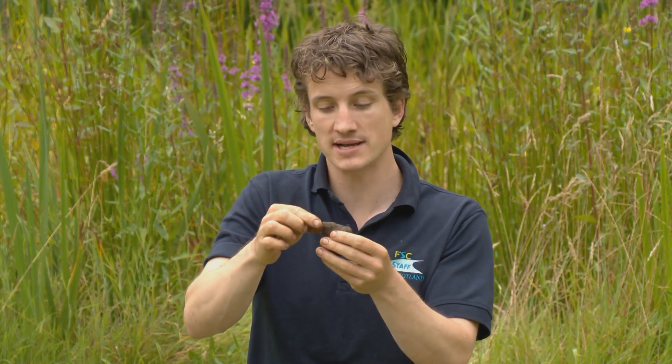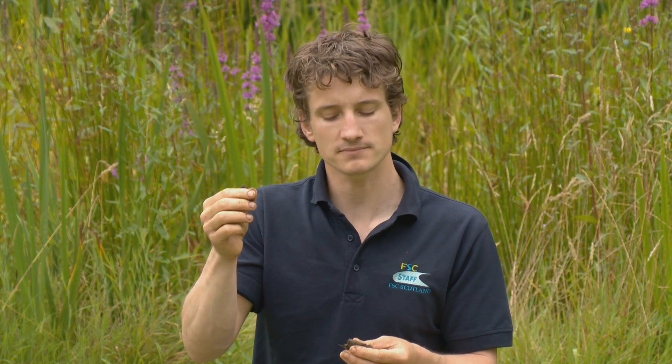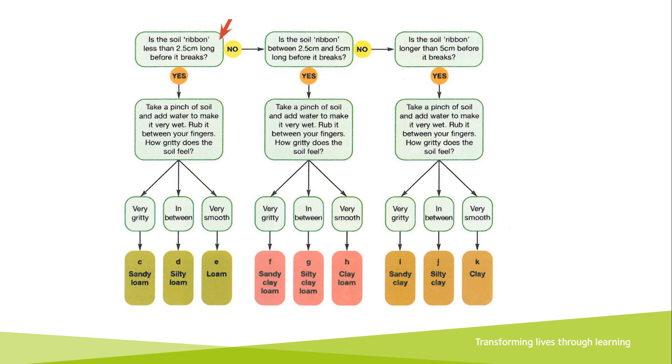My last step in the texture test is to take a small pinch of soil and rub it between my fingers. It will either feel very smooth, very gritty, or something in between. This one is a very gritty soil. Soil texture charts like the one we're using today give you a standardised method to categorise a soil based on the proportions of these three size classes — sand, silt, and clay.